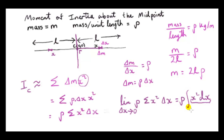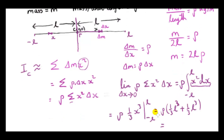Our limits of integration run from −L to +L, covering the entire rod. The integral of x² is (1/3)x³. Plugging in the upper limit gives (1/3)L³, and plugging in the lower limit gives (1/3)(−L)³ = −(1/3)L³. Subtracting gives (1/3)L³ − (−(1/3)L³) = (2/3)L³. So the result is (2/3)ρL³.